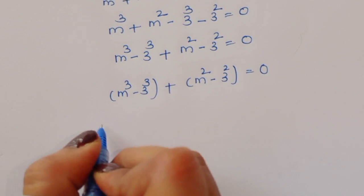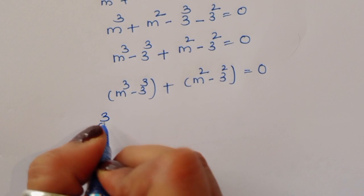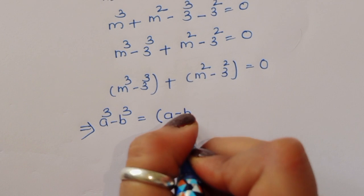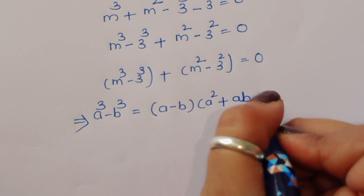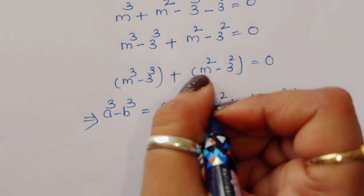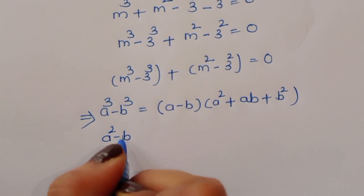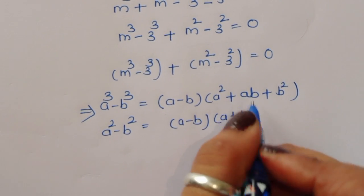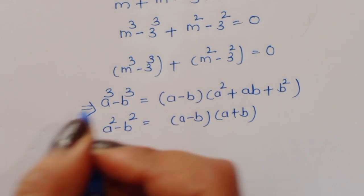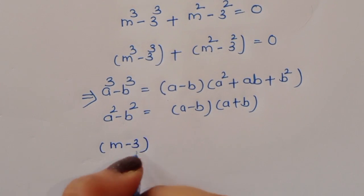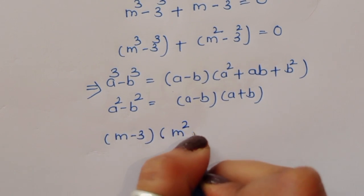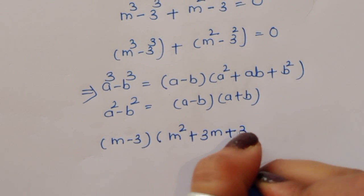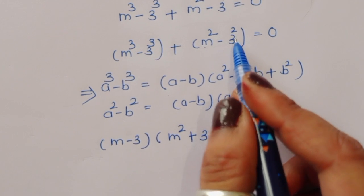Now m³ - 3³ is in the form a³ - b³. The formula for a³ - b³ = (a - b)(a² + ab + b²), and a² - b² = (a - b)(a + b). Applying these two formulas, we get (m - 3)(m² + 3m + 9) + (m - 3)(m + 3) = 0.